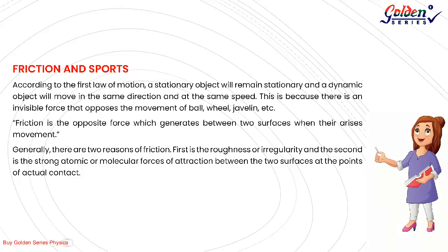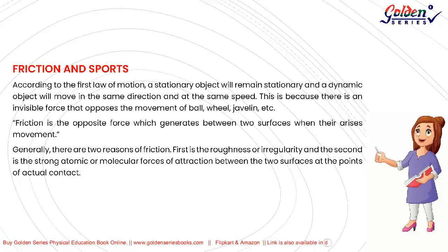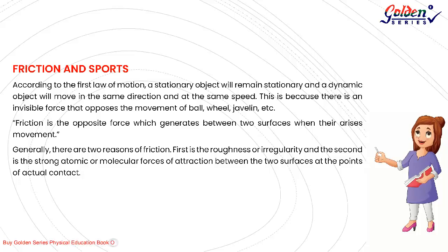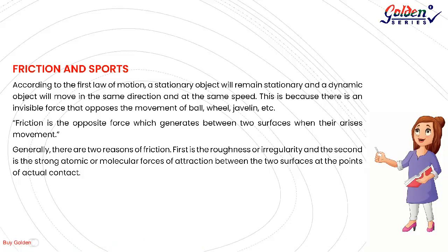Friction and Sports. According to the first law of motion, a stationary object will remain stationary and a moving object will move in the same direction at the same speed. There is an invisible force that opposes the movement of a ball, wheel, javelin, etc. Friction is the opposing force which is generated between two surfaces when movement occurs. There are two causes of friction: roughness or irregularity of surfaces, and strong atomic or molecular forces of attraction between the two surfaces at points of actual contact.